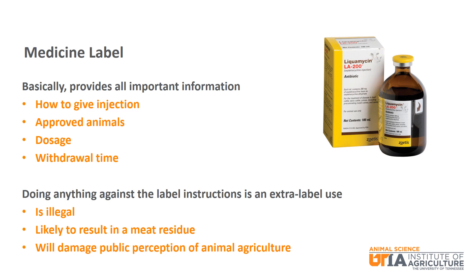Basically, the medicine label provides all of the details needed to properly administer medications to beef cattle and other species. The trade name is how you know most medications. For example, Banamine is the trade name for Flunixin. Chances are you have heard of Banamine, but never heard of Flunixin.